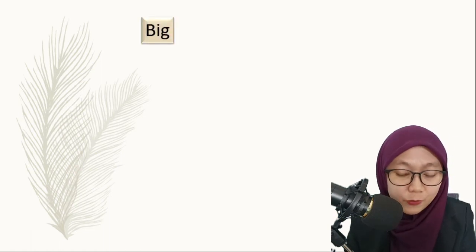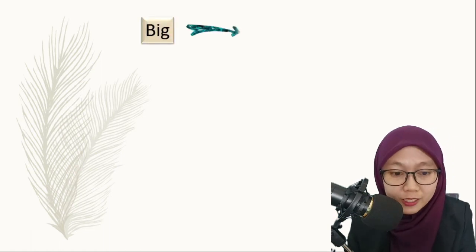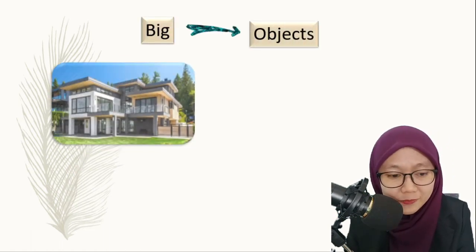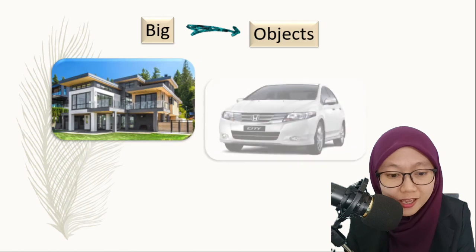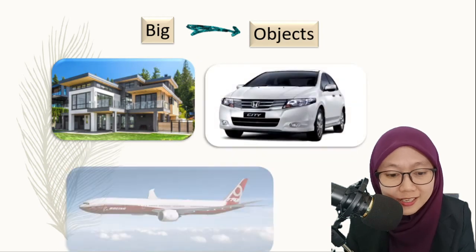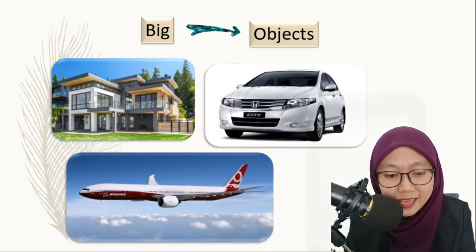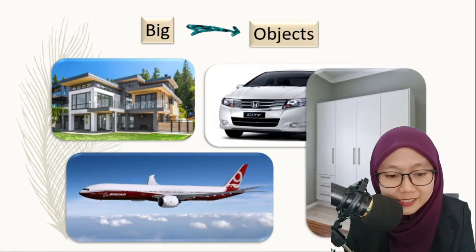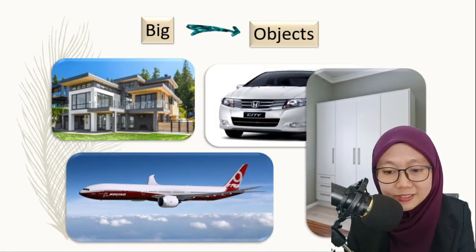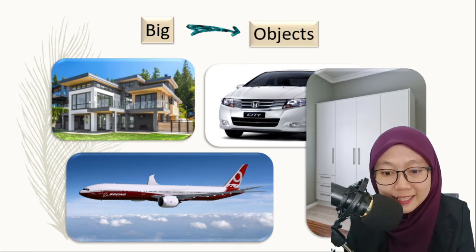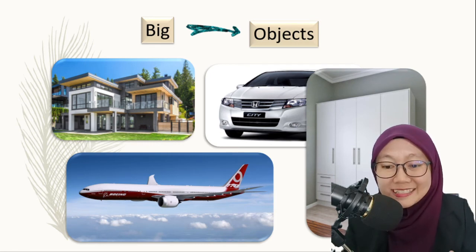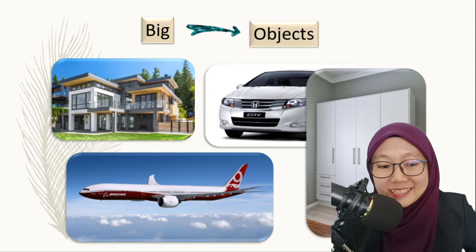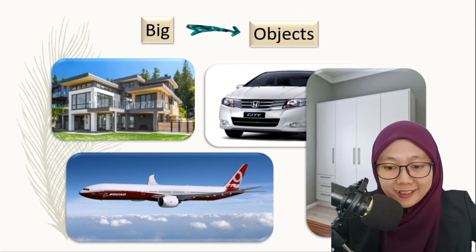We also have big objects. For example, like a house, car, aeroplanes, and cardboard. You can name other things — other objects that are big.